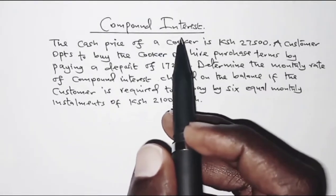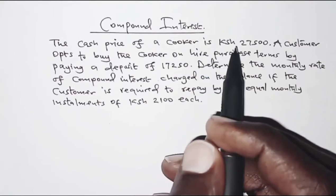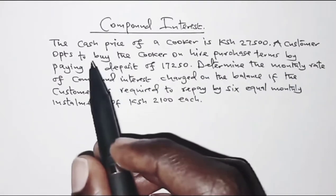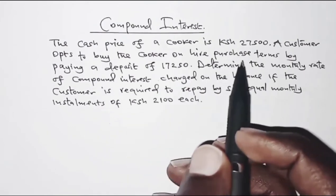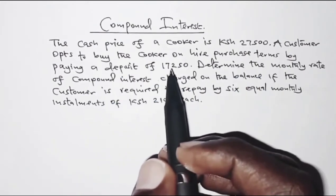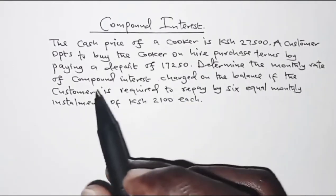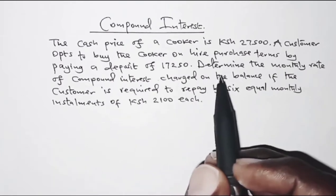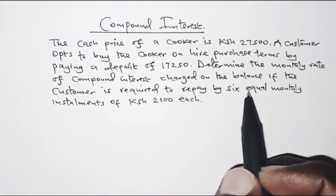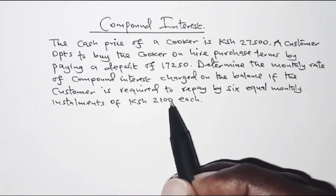The question today is on compound interest. It reads: The cash price of a cooker is 27,500. The customer opts to buy the cooker on hire purchase terms by paying a deposit of 17,250. Determine the monthly rate of compound interest charged on the balance if the customer is required to repay by six equal monthly installments of 2,100 shillings each.